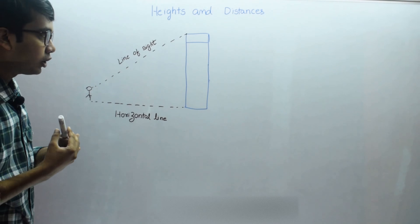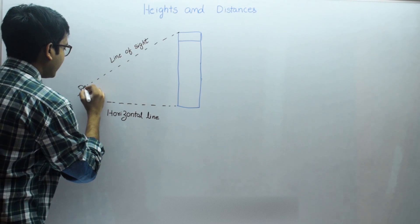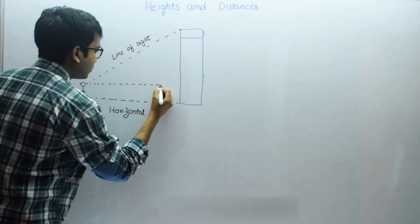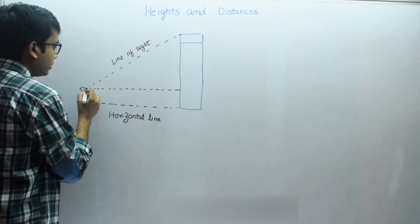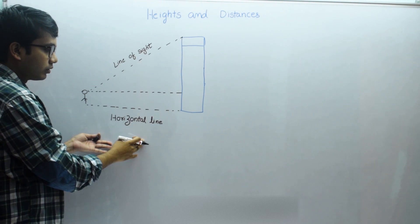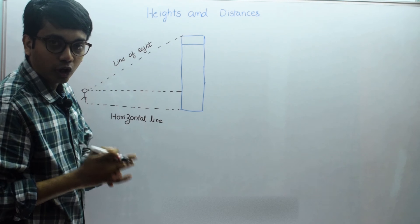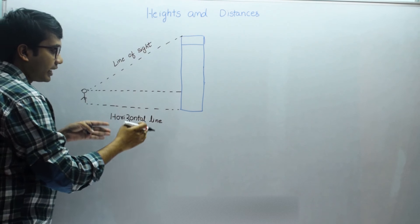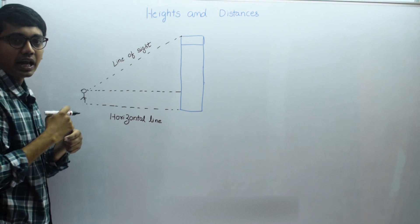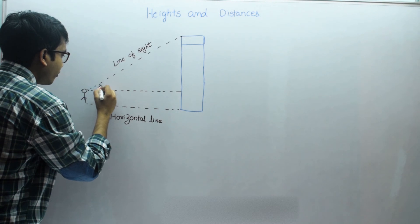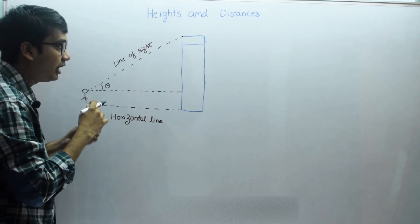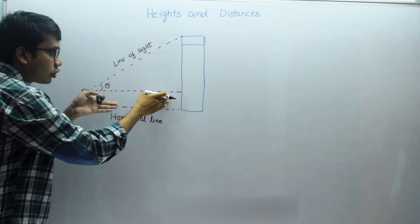Next we will go to the angle of elevation. Now, the distance from his eyes to the building — the horizontal distance — is the same as this horizontal line. The angle of elevation is the angle made by this line of sight with this horizontal line. Let it be theta. So theta is the angle made by the line of sight with the horizontal line.